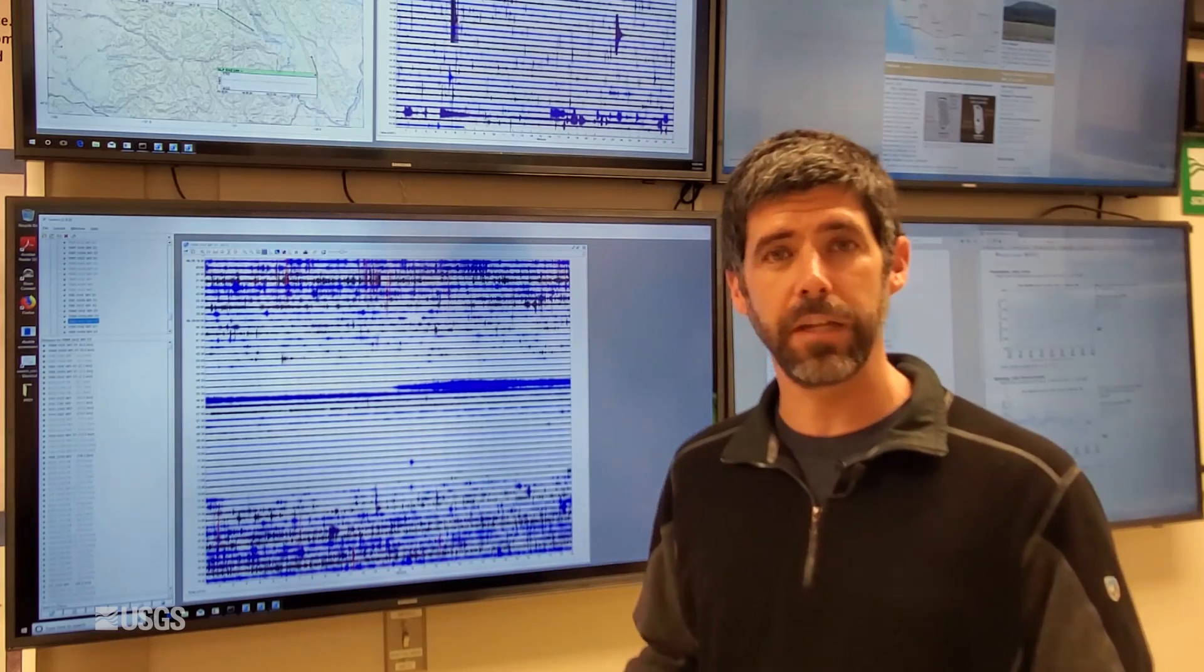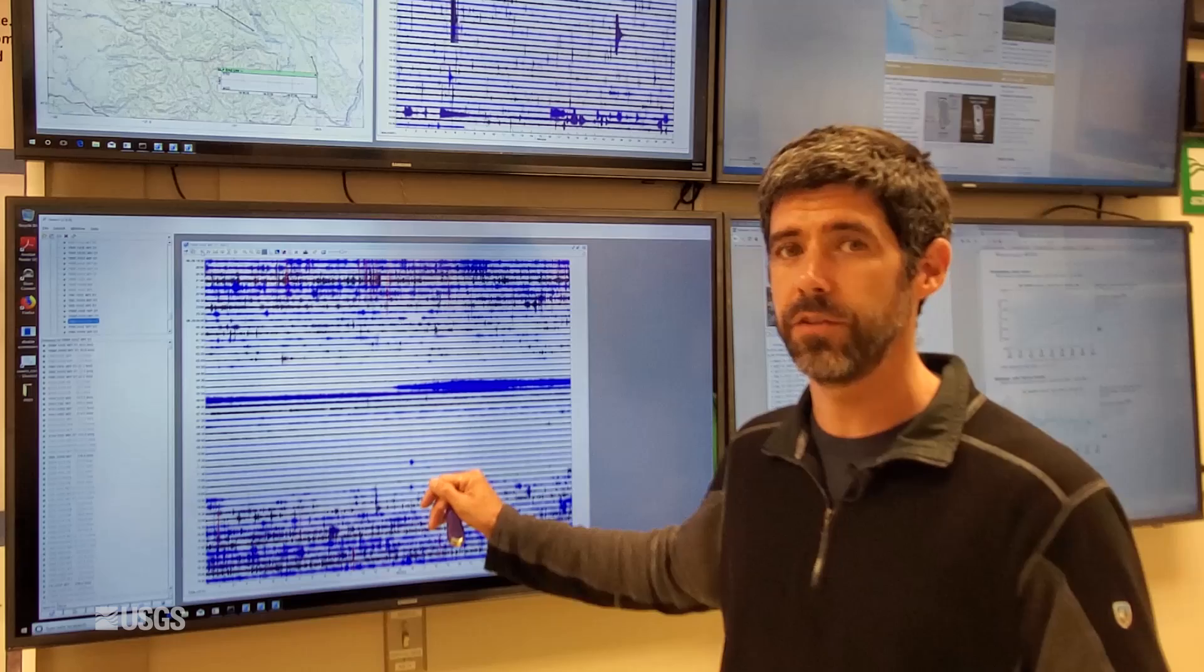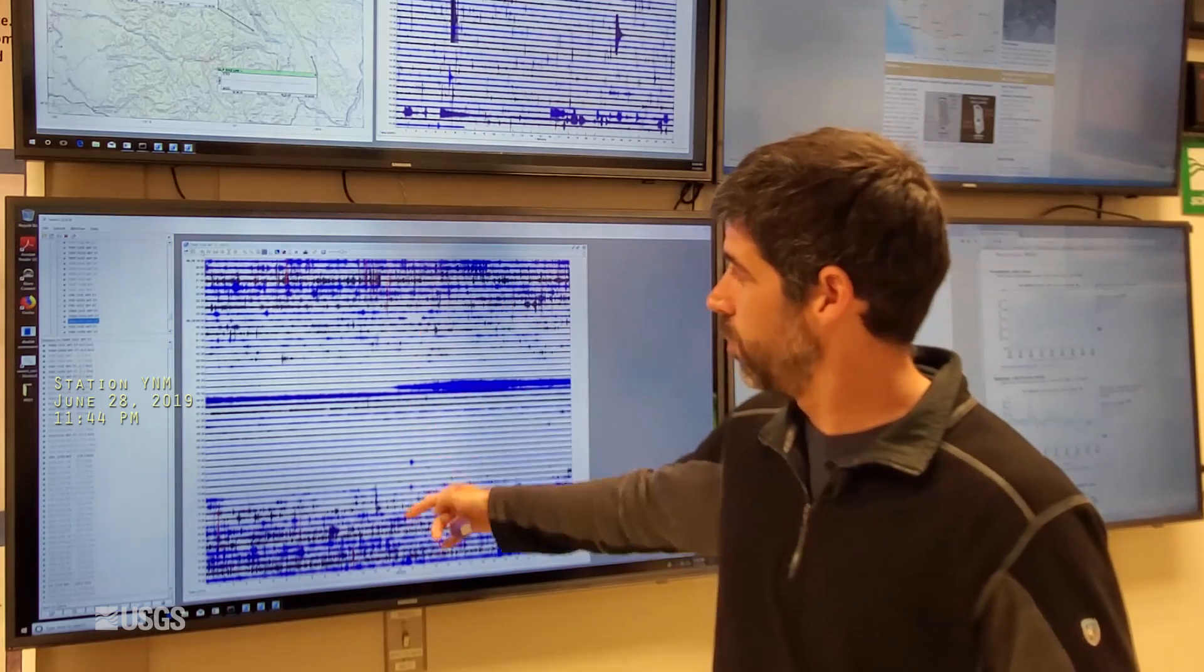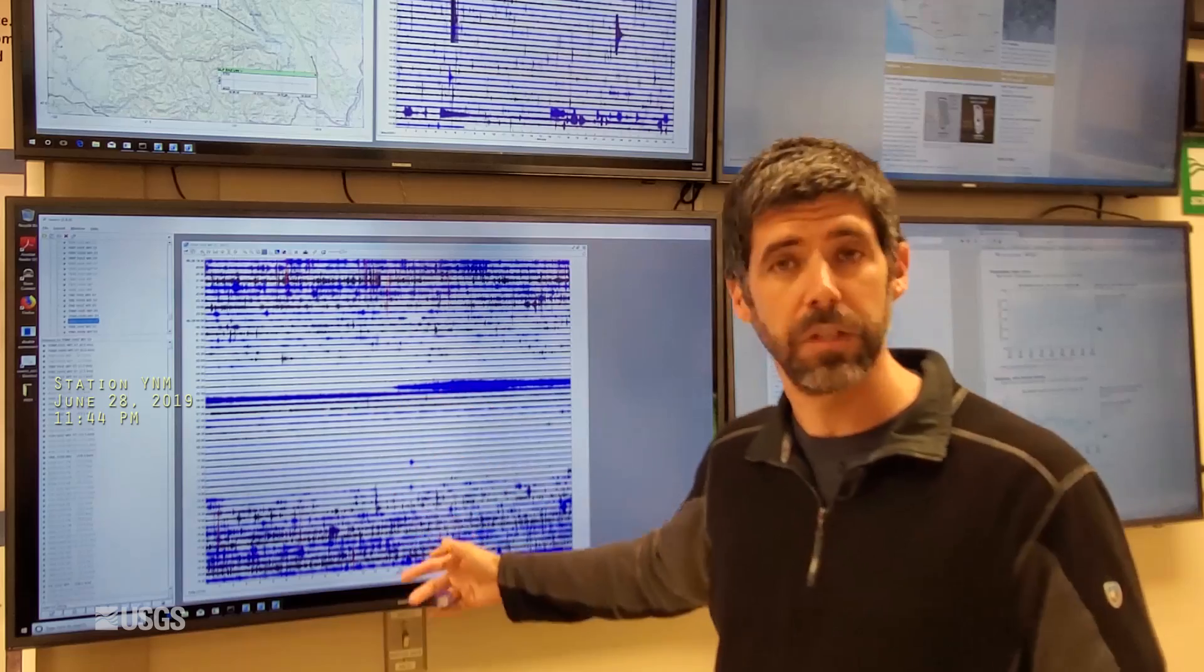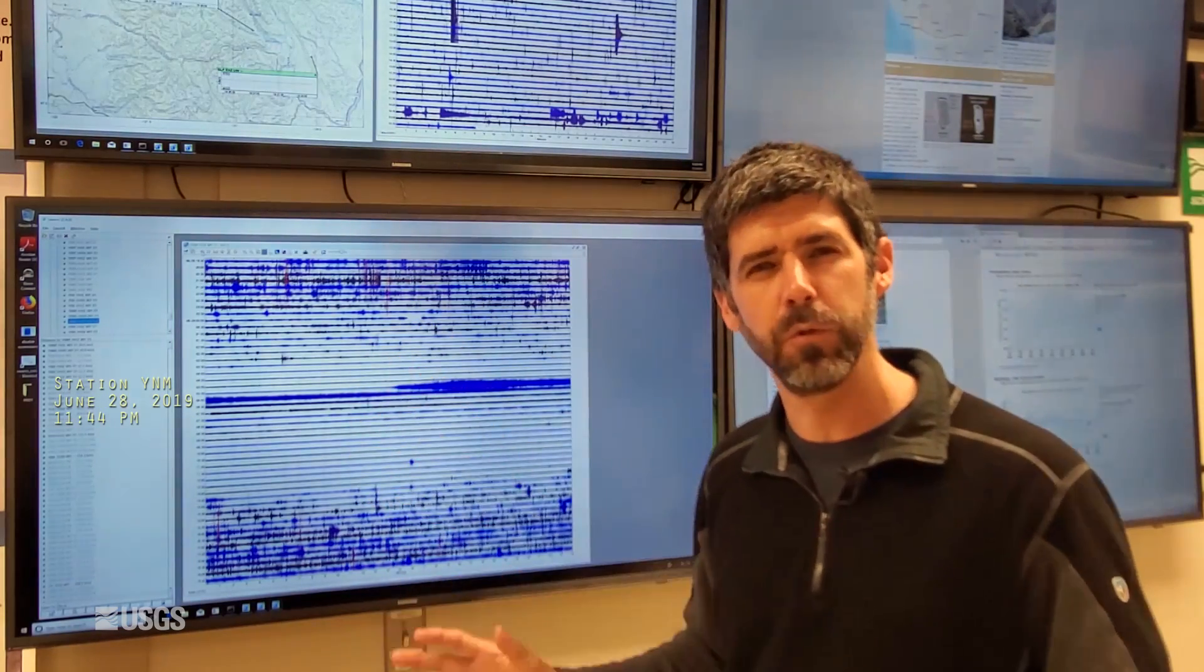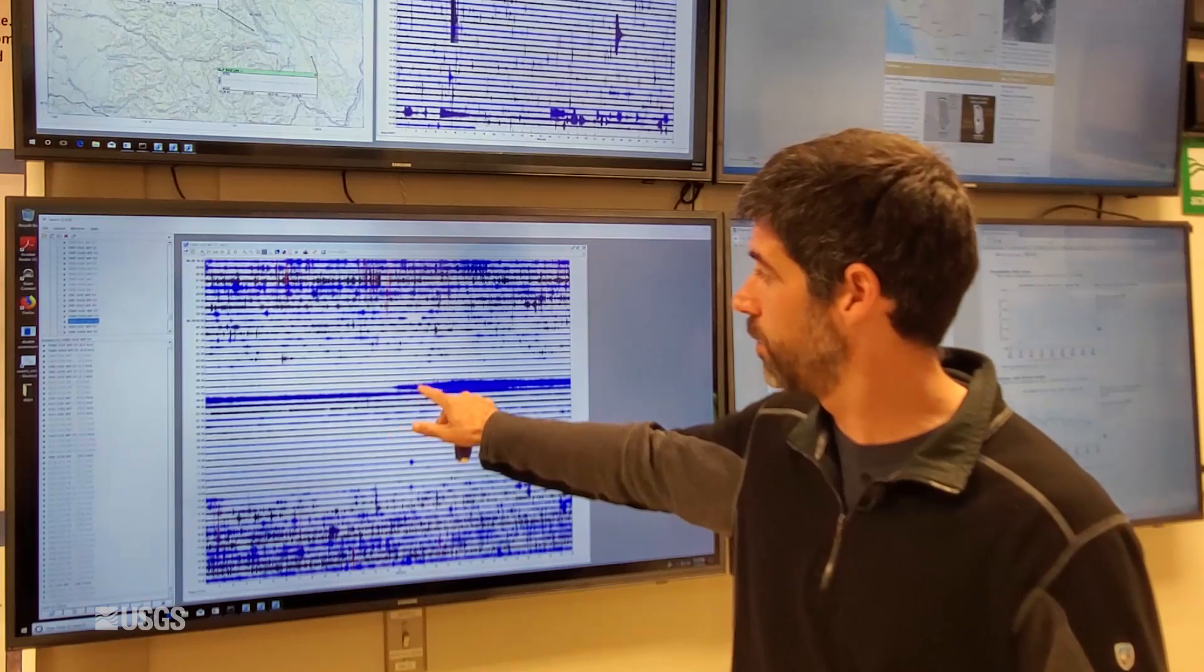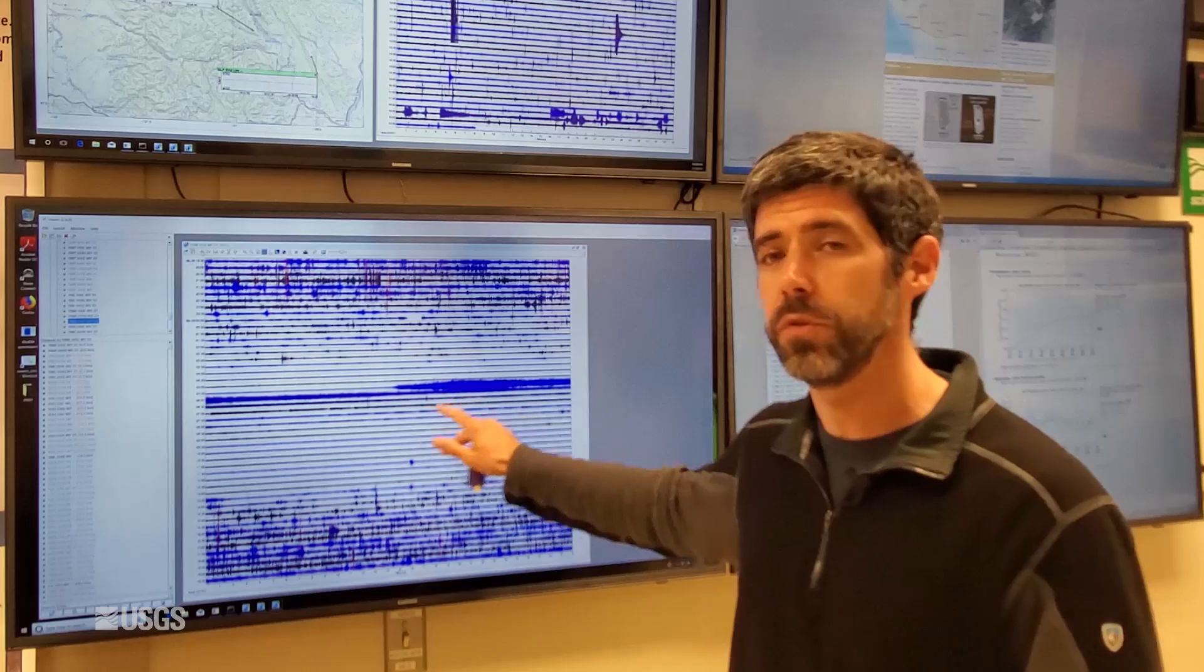If you've wondered what Steamboat looks like to a seismologist, this is the seismic signal for the June 28th eruption. This is a seismometer located at the Norris Museum building in the Norris Geyser Basin. All this noise at the top and bottom of the screen is people walking around the geyser basin during the daytime. The quieter time is at night when there are fewer people around, and that's when Steamboat started to erupt at 11:44 p.m. on June 28th. You see how it comes on strong and then over the next half hour to 45 minutes or so, it gradually fades.